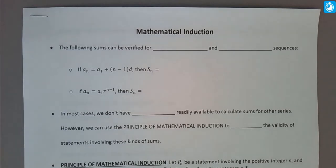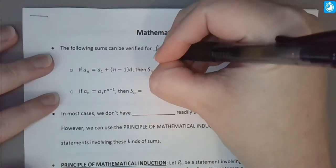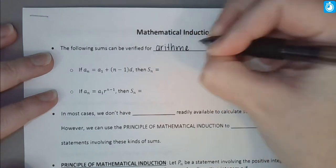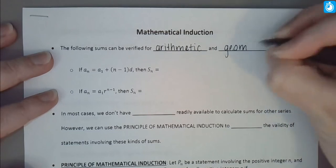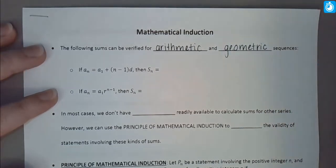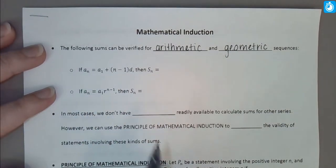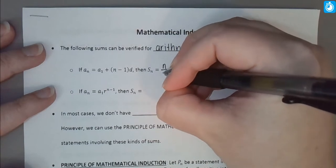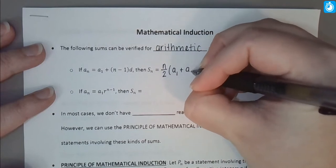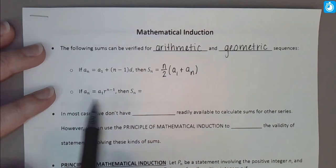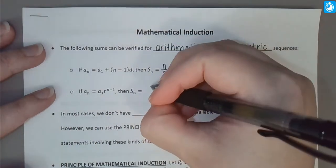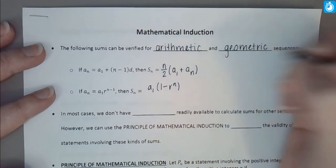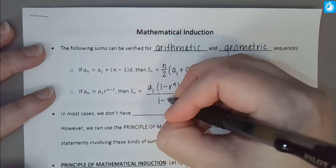In this video, we're going to introduce the concept of mathematical induction, which is closely related to what we've discussed so far with sequences and series. The following sums can be verified for the special sequences known as arithmetic and geometric sequences. For an arithmetic sequence, the nth partial sum equals n divided by 2 times the sum of the first and nth terms. For a geometric sequence, it equals the first term times 1 minus the common ratio to the nth power, divided by 1 minus the common ratio.